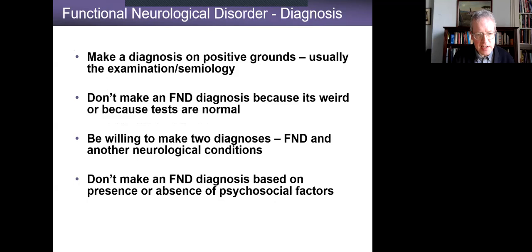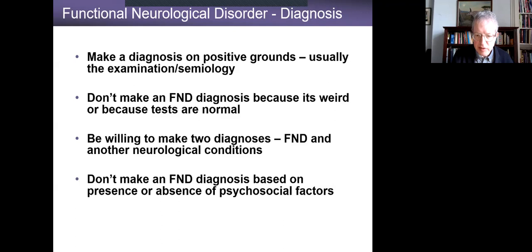These are my key points today: FND is a diagnosis you should make on positive grounds. It's not about doing a bunch of tests which are normal — that's bad medicine, bad neurology. It's about making a positive diagnosis. When you realize that, it enables you to diagnose FND alongside another neurological condition. This is not about either/or. Many patients have both FND and another disorder, for example Parkinson's or epilepsy. And don't make this diagnosis just because someone has a psychiatric problem, or because the presentation is bizarre or you haven't seen it before. That's bad neurology.